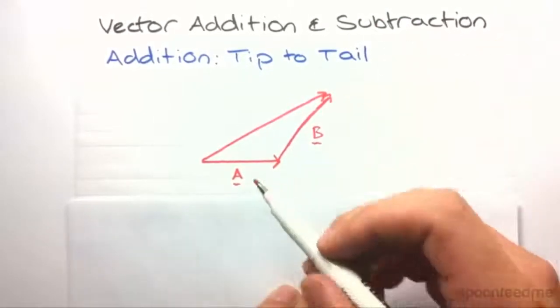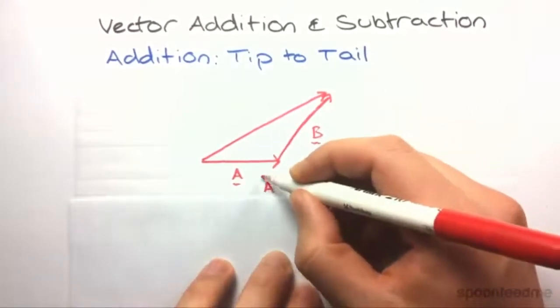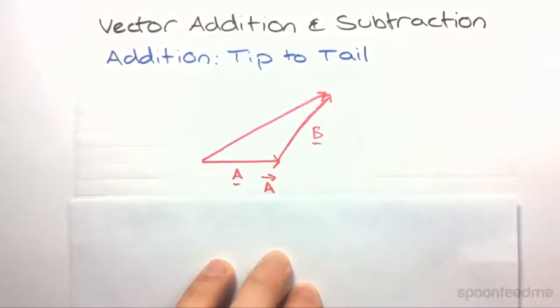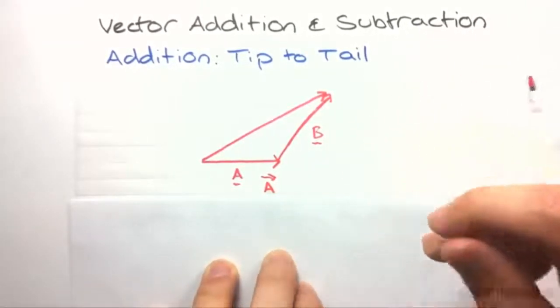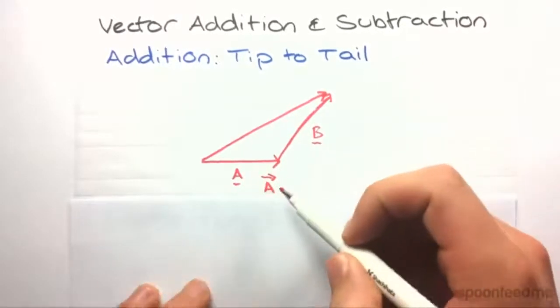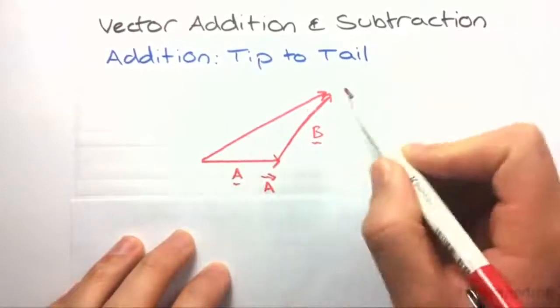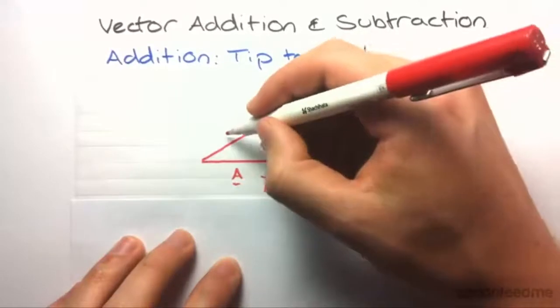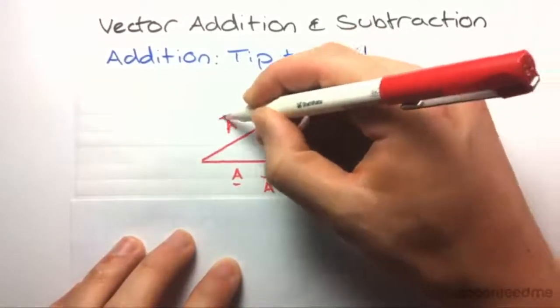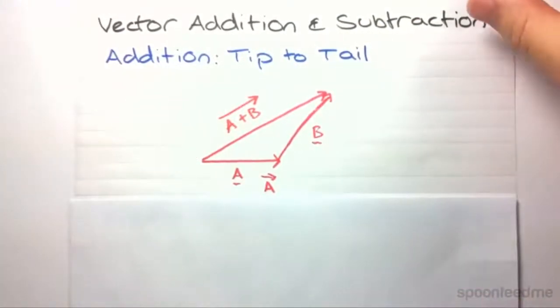Just a quick thing on notation, vectors are often represented like this. You may also see something like that. You may also see a letter in bold, but I can't really draw that, but in exams it's very common, it's easy to do on the computer. So back to addition, the resulting vector of the addition of these two vectors is this one, and it will look a little something like that. So tip to tail, that's how we add graphical representations of vectors.